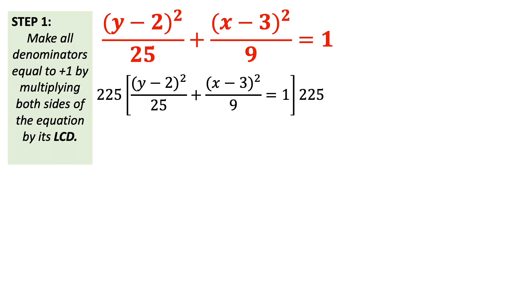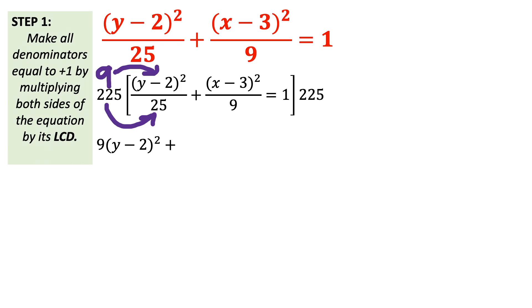Now, let's multiply both sides of the equation by 225 to rewrite the standard equation with no fractional terms. Starting with the first fractional term: 225 divided by 25 is 9. So we have 9 multiplied by the quantity (y minus 2) squared. We will simplify this in the next step. Moving to the second fractional term: 225 divided by 9 is 25.